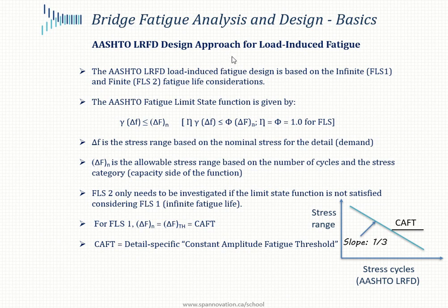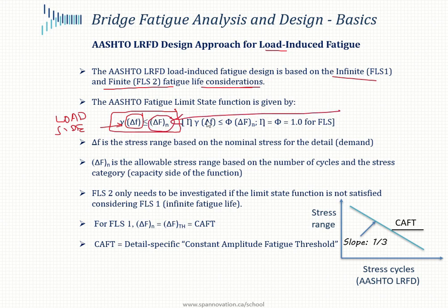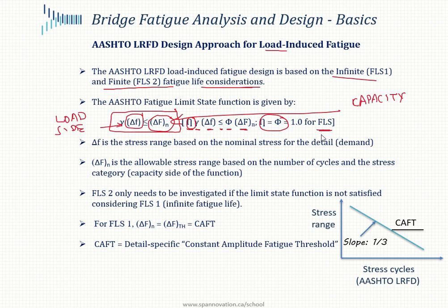Let's look at the AASHTO LRFD design approach for load-induced fatigue. We have FLS 1, the infinite life fatigue consideration, and FLS 2, the finite fatigue life consideration. The limit state function in AASHTO is given by gamma times delta F — the nominal stress on the demand side — which must be less than or equal to delta F on the capacity side. Note that eta and phi are both equal to 1.0 for the fatigue limit states.